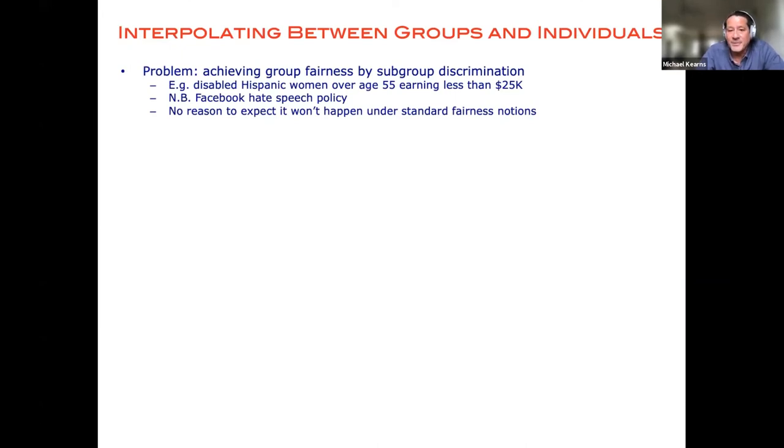So what we're concerned about is that even if, for instance, I asked to be fair by race, by gender, by disability status, etc., so I could write down all these constraints, like the error rate has to be the same across racial groups, gender groups, income groups, disability, etc. There is no guarantee that if I satisfy all of those fairness constraints that I still won't end up discriminating, for example, against disabled Hispanic women over age 55 earning less than $25,000 annually. Because I only asked to enforce the fairness constraints marginally by each of those attributes; I didn't ask for combinations of them.